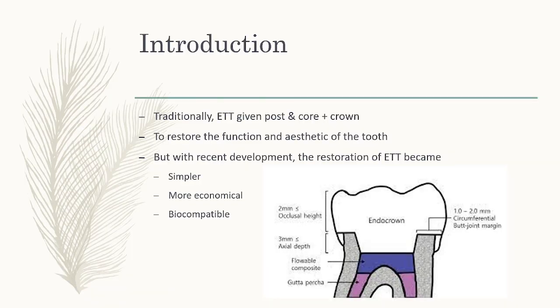As an introduction, traditionally the endodontically treated teeth were always given a post and core and then a crown in order to protect them. We have this concept that whenever you do endo treatment, it is better to protect the tooth with a crown to restore function and aesthetics. But with recent developments in dental materials and dental adhesives, the restoration of endo-treated teeth has become simpler, more economical, and biocompatible.